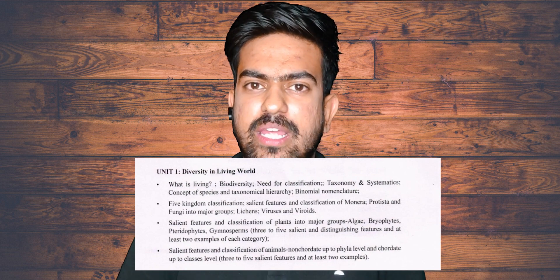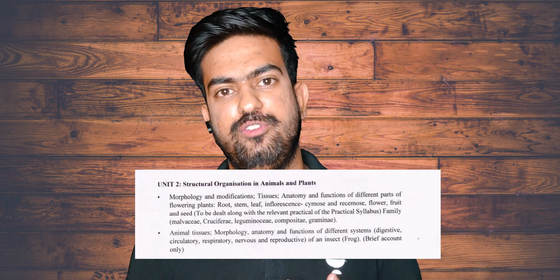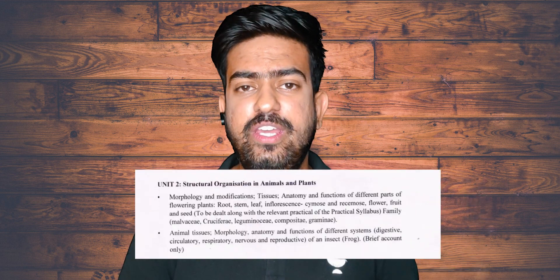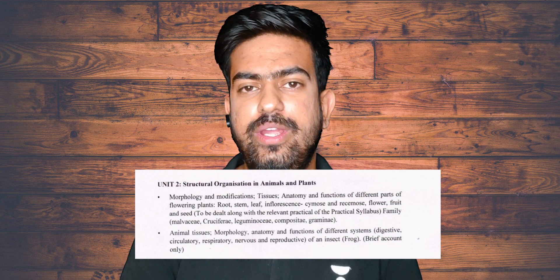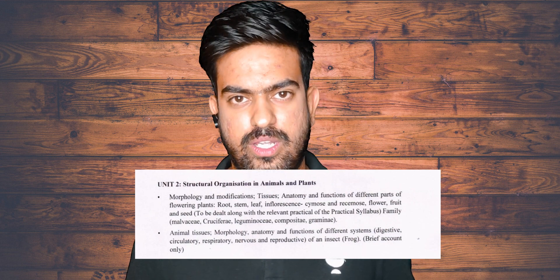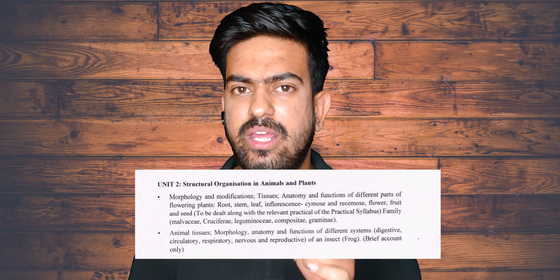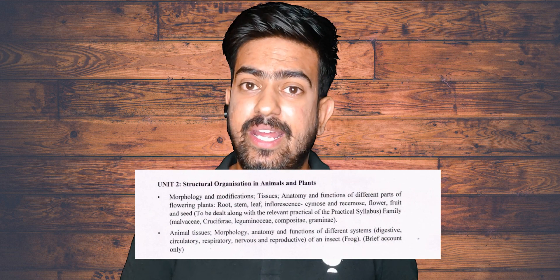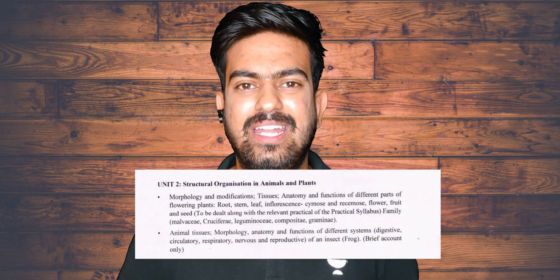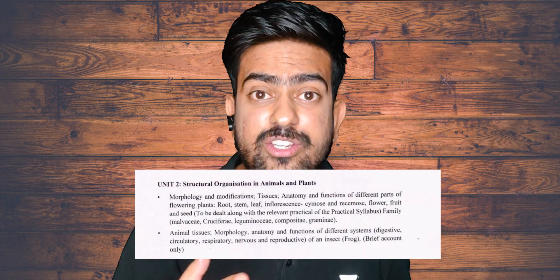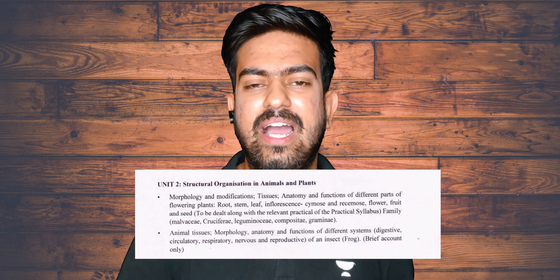For animal diversity there is no change. But the next unit, Unit 2, is very confusing. NMC says that modification of roots, modification of stem, and all these things will be included, but the new rationalized NCERT says they are going to remove all of those things. So here again there is a controversial part where NMC says it will include it in the syllabus but the new NCERT doesn't have this part.